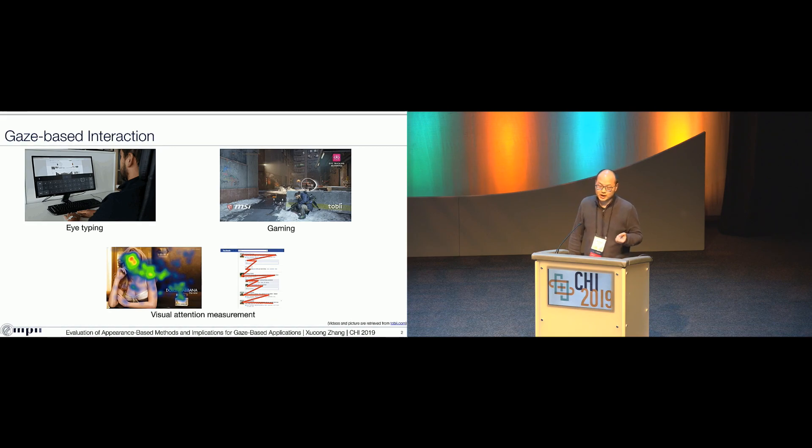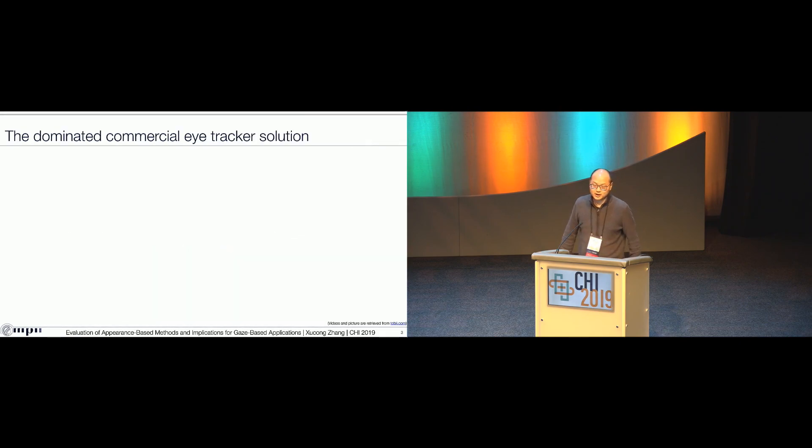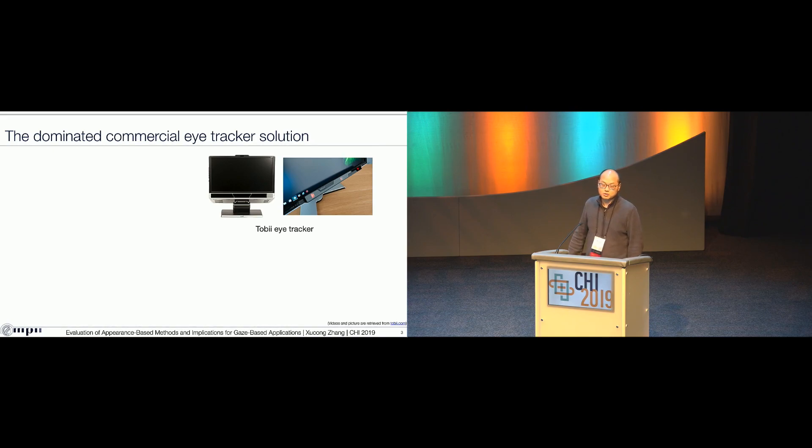Now assuming that you have a nice idea for your next CHI paper, and you want to estimate the user eye gaze in the project, then you will look at recent CHI papers to find out what people are using nowadays. And you will find that most of the gaze-based applications are actually using the commercial eye tracker to retrieve the user eye gaze. Let's take the Tobii products as an example. Those devices usually have high-resolution cameras and also additional infrared light sources. And those devices can provide you very good gaze estimation accuracy, something around 0.5 to one degree gaze estimation error.